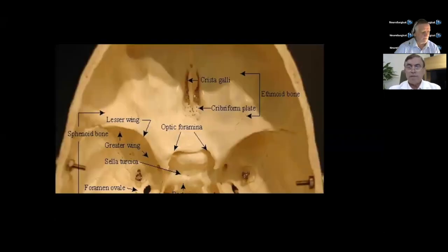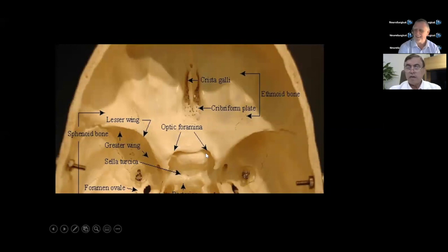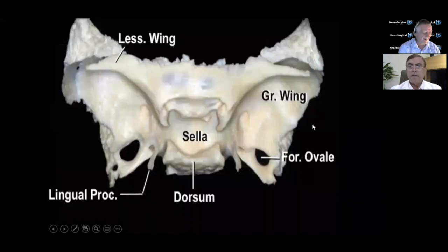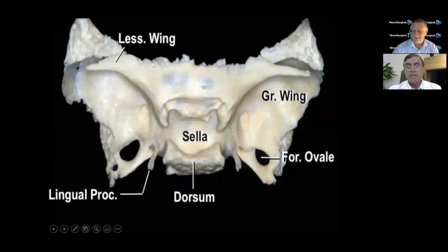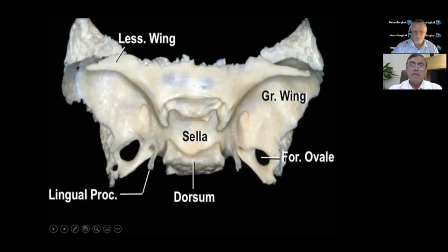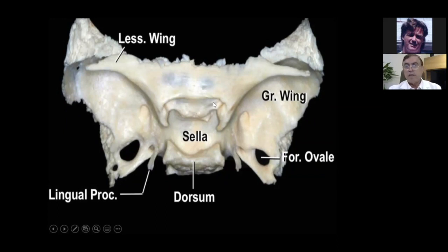People think of the lesser wing as a little thing, but it is a large thing. In that lesser wing there is the optic canal and there is the anterior clinoid process. The anterior clinoid is the medial tip, medial part of this great structure which is the lesser wing of sphenoid, which contains the optic canal.